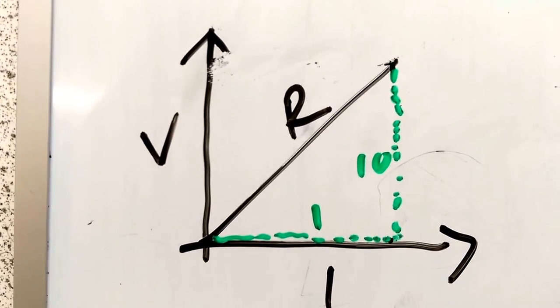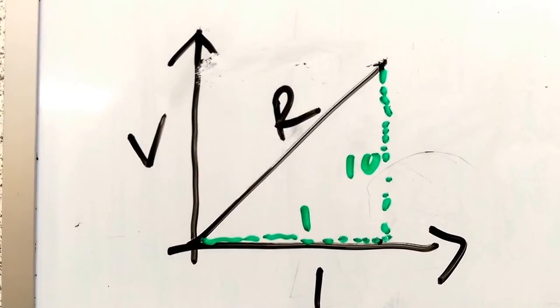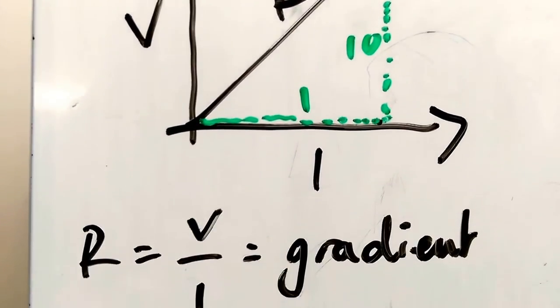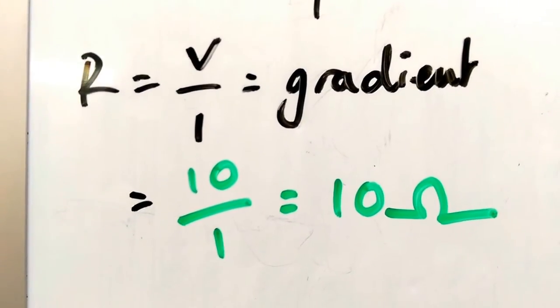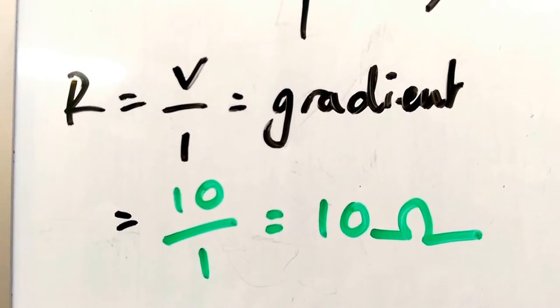So here I take my line of best fit, and I see how tall it is: 10, 10 volts tall, and I see how wide it is: 1, 1 amp wide. And then I can do a gradient. The gradient is the up distance divided by the across distance, or 10 divided by 1.